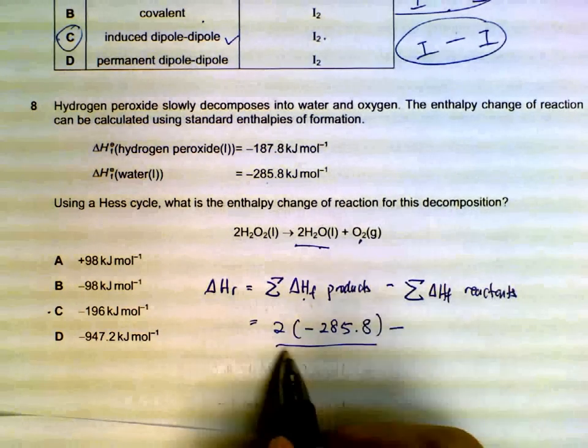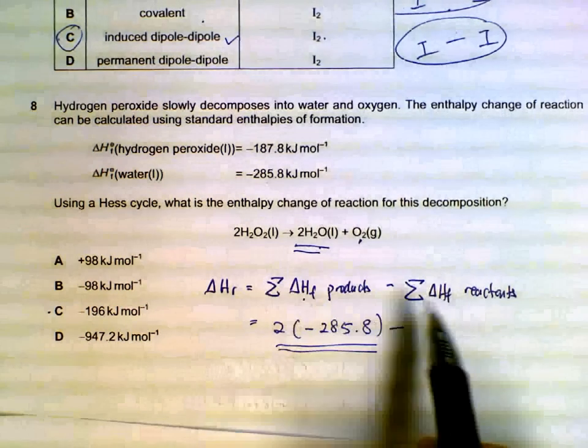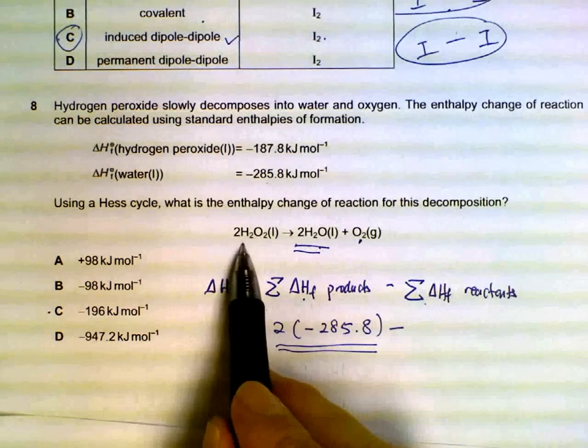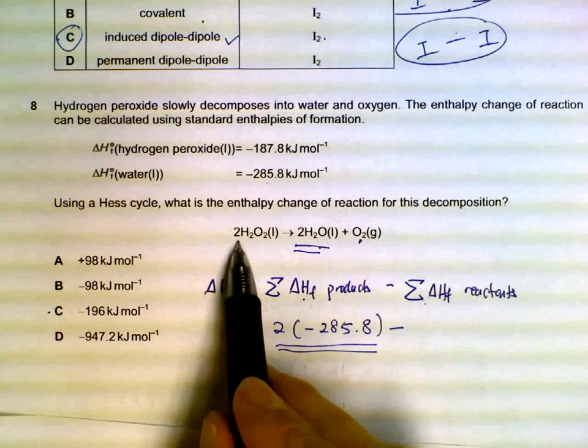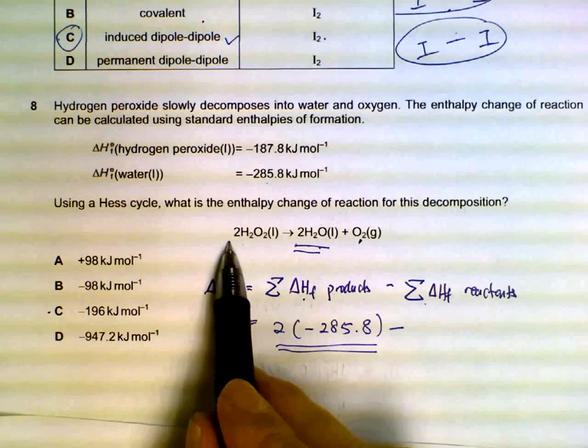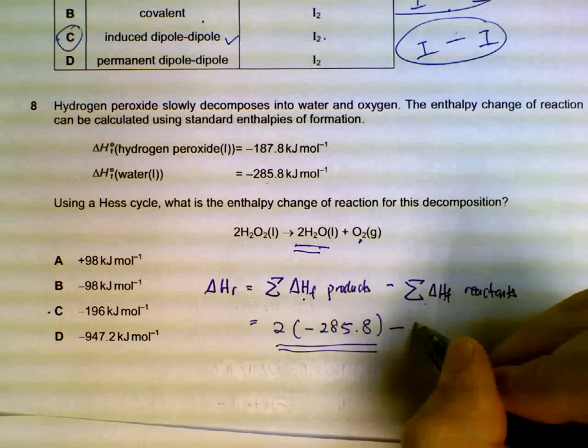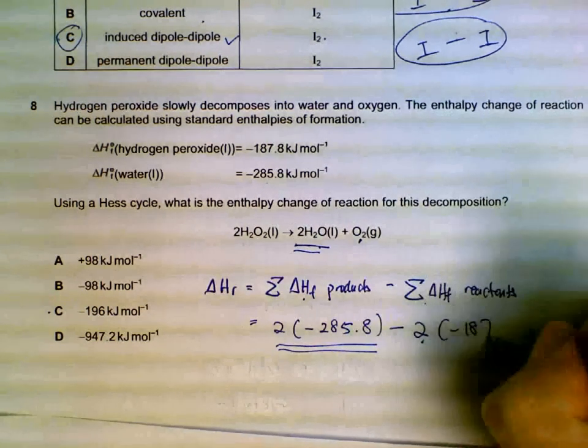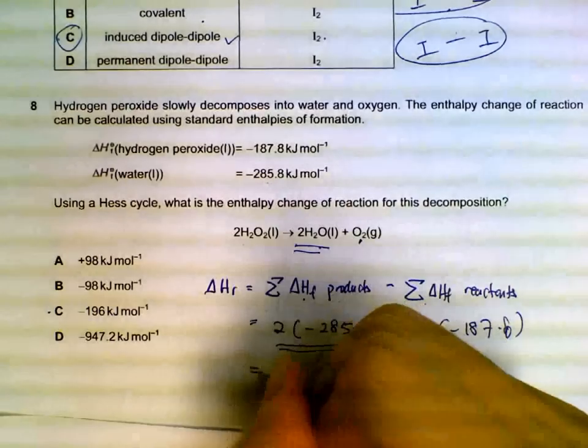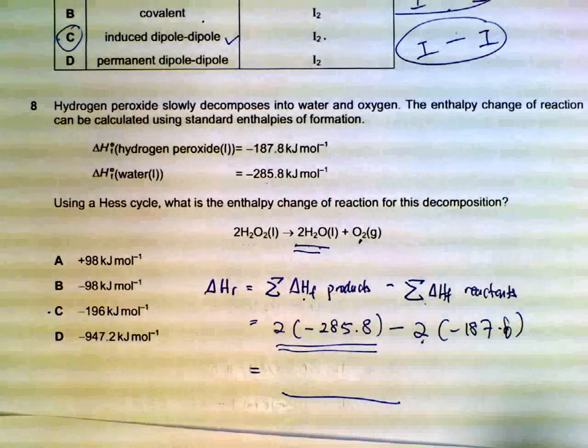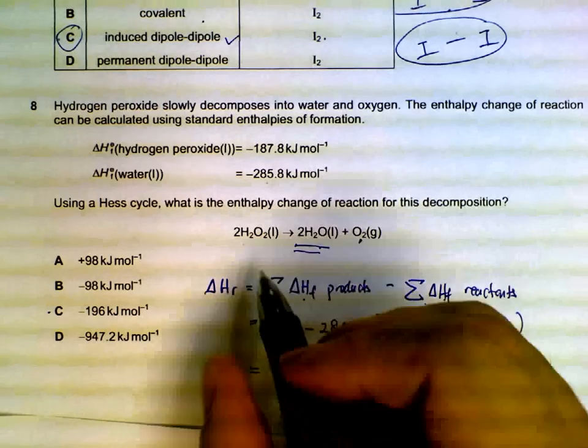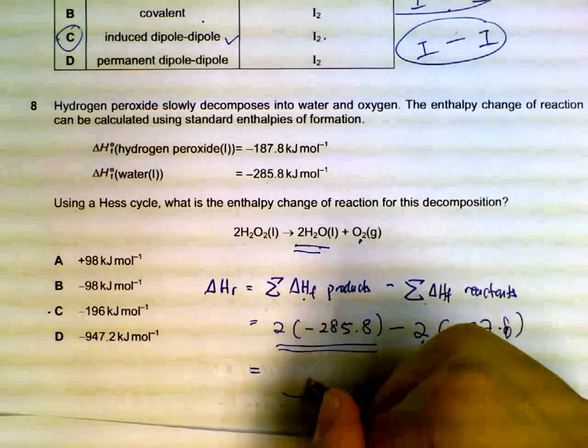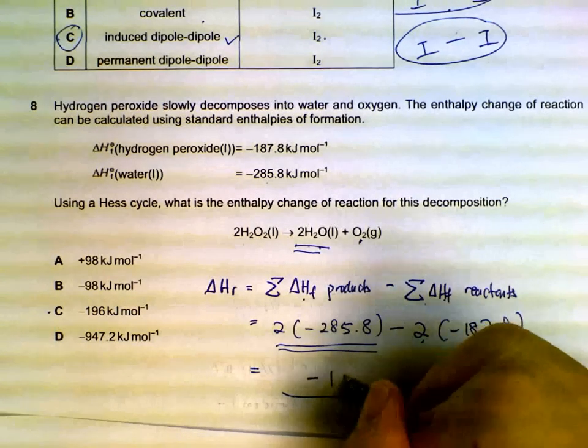So we have this for the water. Heat of formation of reactants - we have hydrogen peroxide, but two moles. So to form two moles of hydrogen peroxide, we multiply by two and multiply by 187.8.